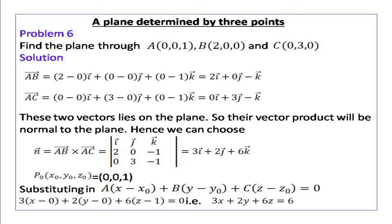Next we are going to see how to find the equation of a plane if three points on the plane are given. Consider the problem: Find the plane through A(0,0,1), B(2,0,0) and C(0,3,0).